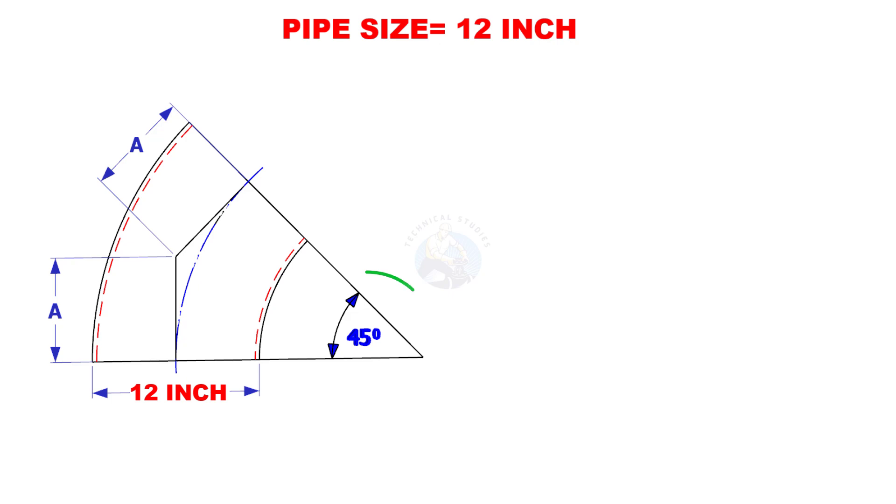Try one more example. The NPS is 12 inches and the degree is 45. Here the constant is 15.9. Multiply 12 by 15.9. Here the center to end distance is 190.8 millimeters.